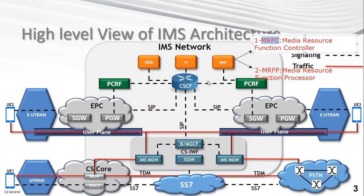The MRFC is in the control plane as it just handles signaling, but MRFP is in the user plane so it handles the traffic. The function of MRF is to provide announcements to the user — for example, when a user finishes his balance or credit, the network gives an order to MRF to send an announcement. The MRFC sends the signaling messages to MRFP so that the MRFP can play the announcement that the credit is finished.